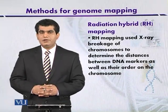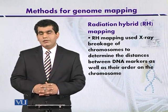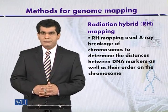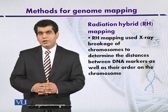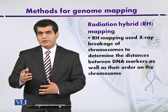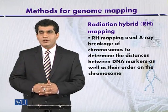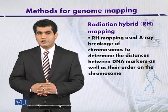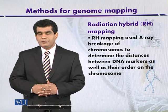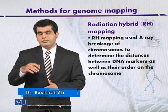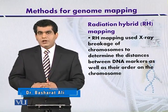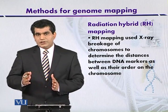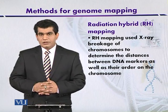Radiation Hybrid Mapping, or RH Mapping, is a technique used for the mapping of mammalian DNA like the human genome. Here we can use X-rays to cause fragmentation of the target DNA. When we expose mammalian cells like human cells, depending upon the dose of the X-ray, it can cause fragmentation of the genomic DNA. This fragmentation pattern can be detected so that we can analyze the distance between genes as well as their locations on the chromosome.